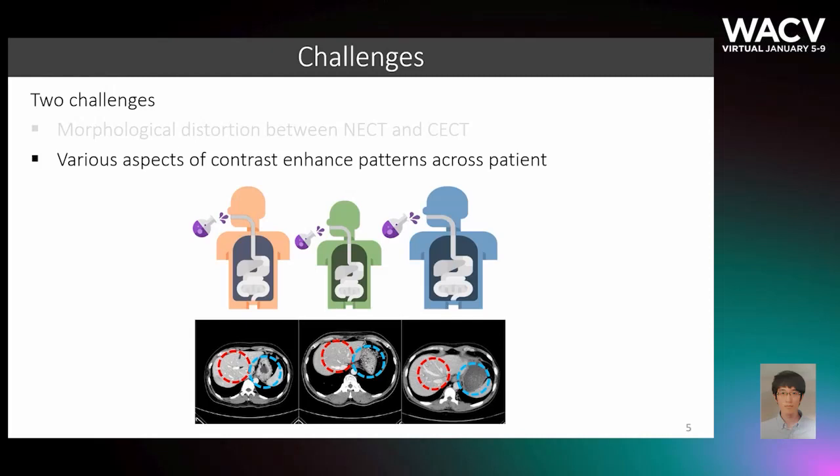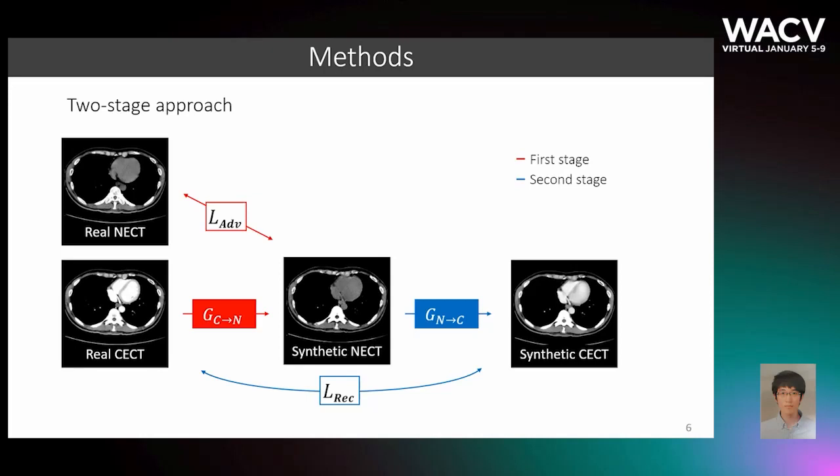I will introduce our method proposed to overcome these issues. We propose a two-stage approach to address the problems mentioned earlier. The key idea is to synthesize well-aligned NECT from a given real CECT first, and then train our target model GN2C using reconstruction losses. Our framework is able to provide patient-specific supervision to our target model.